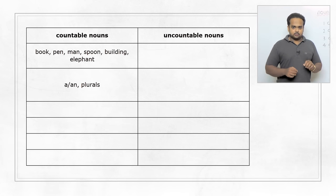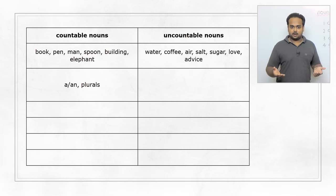But uncountable nouns are nouns like water, coffee, air, salt, sugar, love, advice, and so on. And just by seeing them, you should be able to say there's no way to count them, because water and coffee are liquids, air is a gas. Salt and sugar are so small that if you try to count the individual particles, that would be an extremely difficult task. And love and advice are abstract nouns. Because they're feelings and ideas, so most abstract nouns are uncountable.